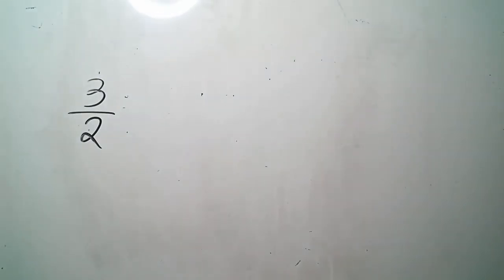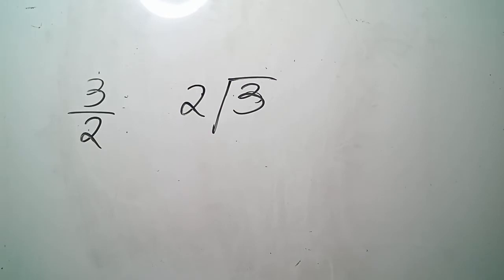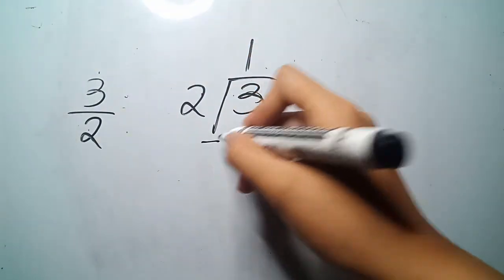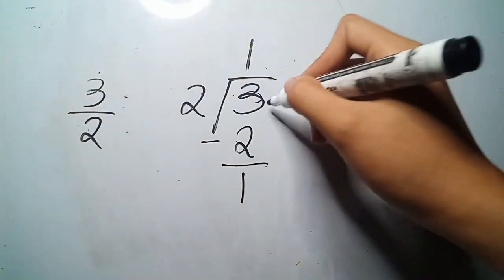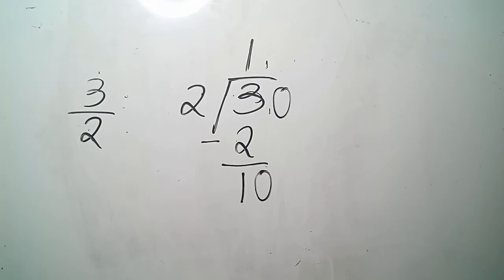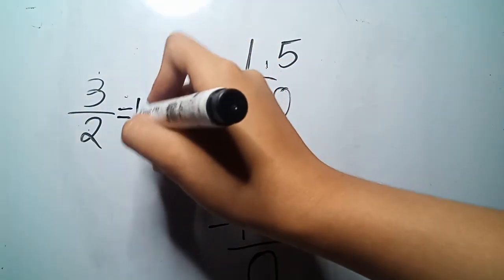Now let's have another example for improper fraction: 3 halves. We convert this into decimal form using the same process — divide the numerator by the denominator. 3 divided by 2 gives us 1. 1 times 2 is 2. 3 minus 2 is 1. Since our remainder is less than our divisor, we add a decimal point and a zero. 10 divided by 2 gives us 5. 5 times 2 gives us 10. 10 minus 10 is 0. Therefore, 3 halves converted to decimal form is 1.5.